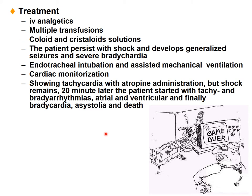This patient had a dissection of the aorta requiring acute intervention immediately. IV fluids, multiple transfusions, colloid and crystalloid solutions were given. But the patient persisted in shock and developed generalized seizures and severe bradycardia. Tracheal intubation, assisted ventilation, and cardiac resuscitation were performed. Atropine was given for bradycardia, but shock remained. Two minutes later, the patient developed tachycardia with brady-arrhythmias, atrial and ventricular, and finally bradycardia, asystole, and death.